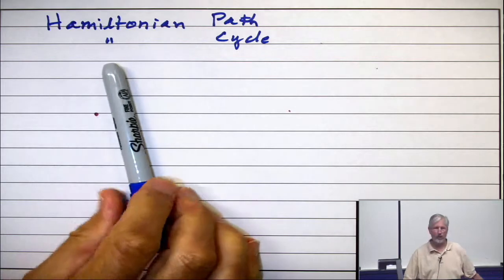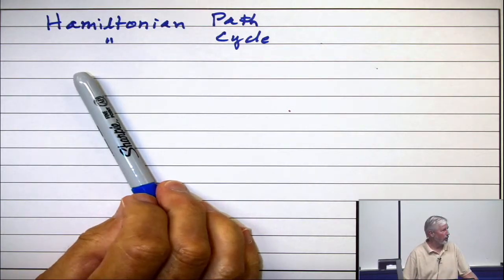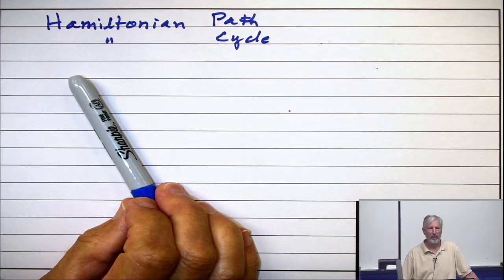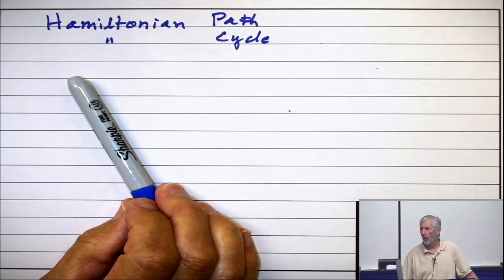Alright, so is it clear what the notion of Hamiltonian paths and Hamiltonian cycles are in contrast to Euler trails and Euler circuits.